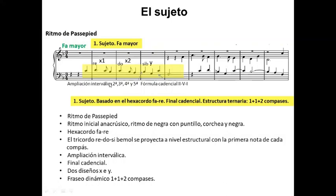A nivel melódico tenemos una ampliación interválica a partir del segundo o tercer compás. Aquí predominan los intervalos de segunda, pero a partir de este intervalo hay una especie de ampliación interválica con tercera, cuarta y quinta justa que tiene efecto cadencial. Las tres últimas notas son el segundo, quinto y primer grado, y esto refuerza este carácter conclusivo junto con la nota más larga, que es la blanca con puntillo que coincide con la tónica. Tiene un carácter melódico descendente con final cadencial. Tenemos un primer diseño X que se repite una segunda diatónica descendente X2, y el diseño cadencial.